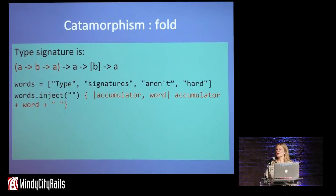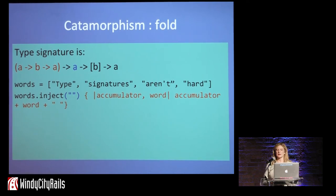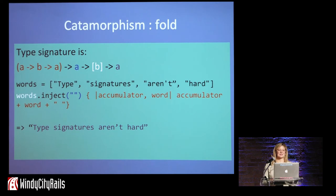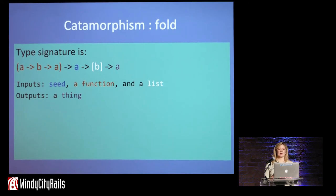The type signature for fold looks complex, but let's start to color-coordinate. We've got a function that takes an A and a B and returns an A — in this case a quick accumulator that will concatenate some words together. It also takes a seed value — here an empty string — and then a list of B's, in our case a list of words. The return value is just a string. Type signatures aren't hard. So that is our catamorphism: it takes a seed, a function, and a list and returns a thing. Inject.